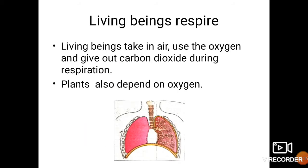The second characteristic is living beings respire. Living beings take in air — we breathe in oxygen in order to survive, use the oxygen, and give out carbon dioxide during respiration. Similarly, plants also depend on oxygen for their respiration. Plants usually respire through stomata, which are small openings present on the lower surface of leaves.